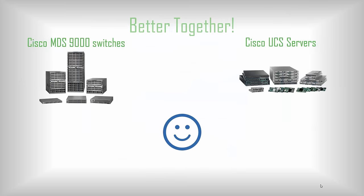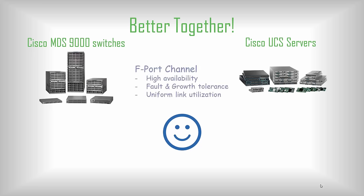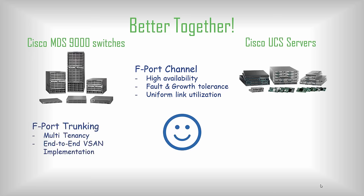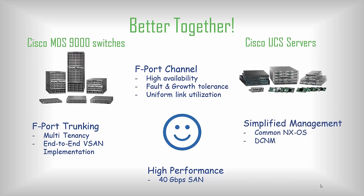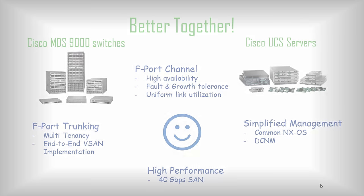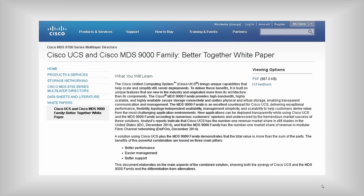To summarize: you can run Cisco MDS switches with non-Cisco servers or Cisco UCS servers with non-Cisco SAN switches, but you're going to miss out on the benefits of F port channel — high availability, fault tolerance, growth tolerance, and better link utilization. You're going to miss out on the benefit of end-to-end vSAN implementation using F port trunking. You're going to miss out on the high performance of 40 Gigabit connectivity, and you're going to miss out on the benefit of common NX-OS and DCNM. For more details, I encourage you to read the Cisco UCS and MDS Better Together whitepaper on Cisco.com.